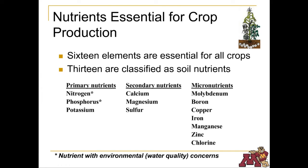Primary nutrients — nitrogen, phosphorus, and potassium — are almost always applied to the field to aid plant growth. Of these, nitrogen and phosphorus have the largest impact on water quality.